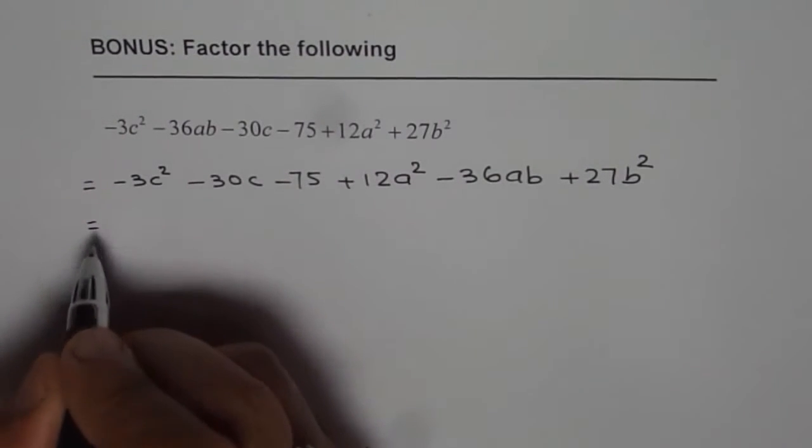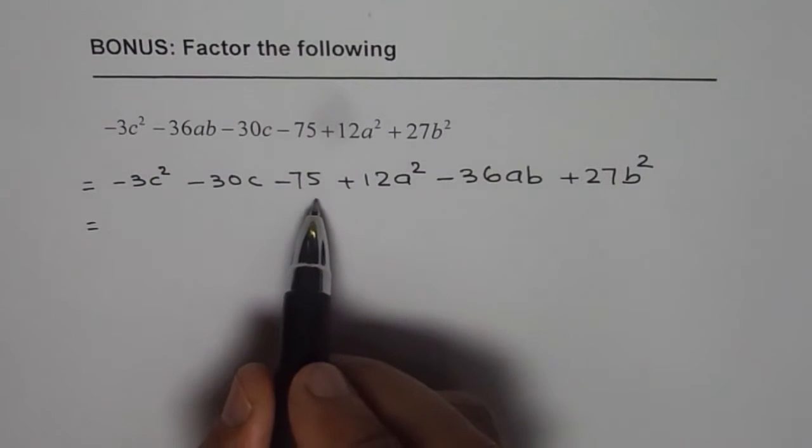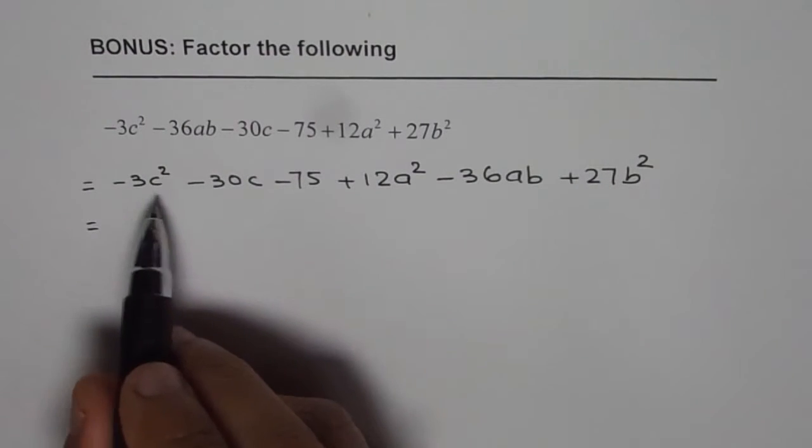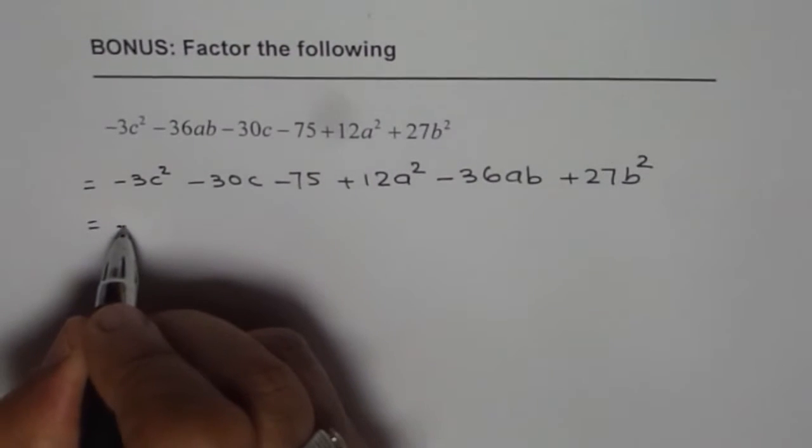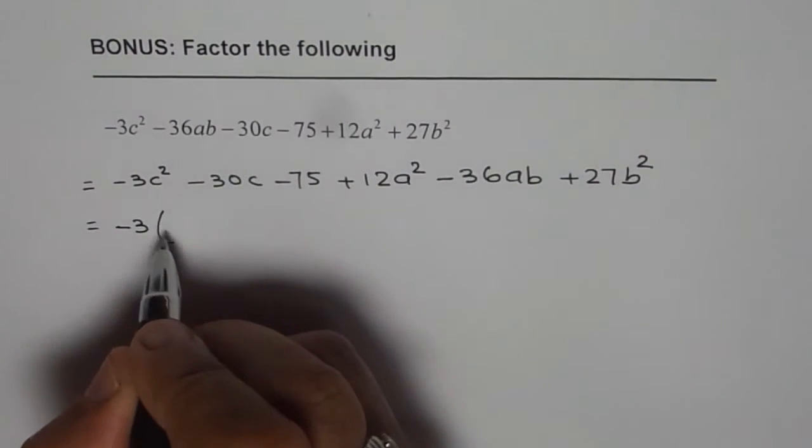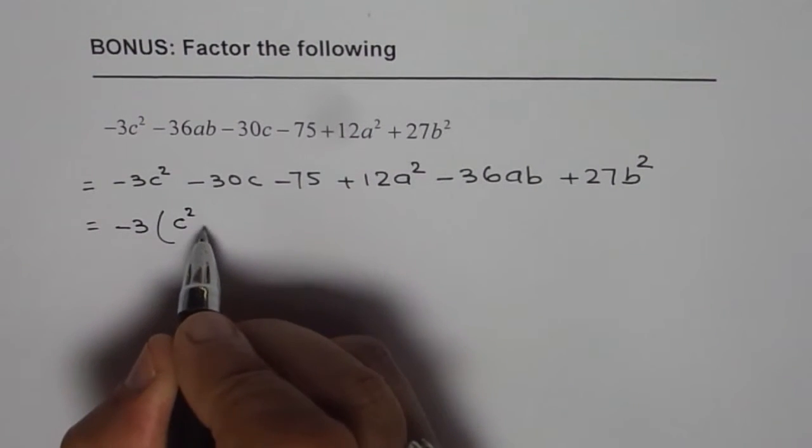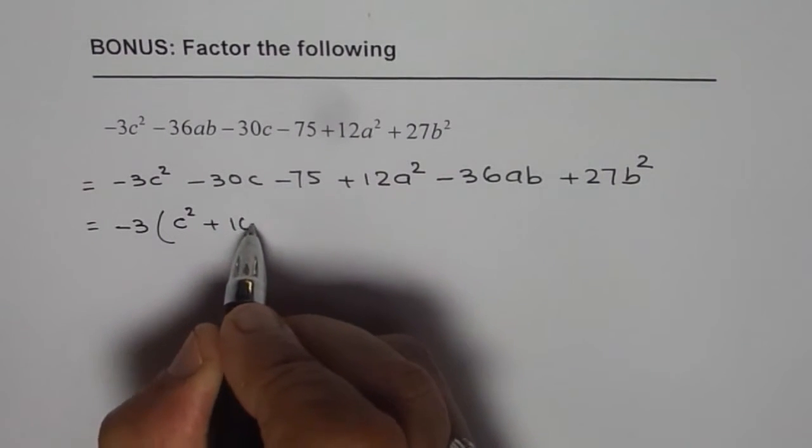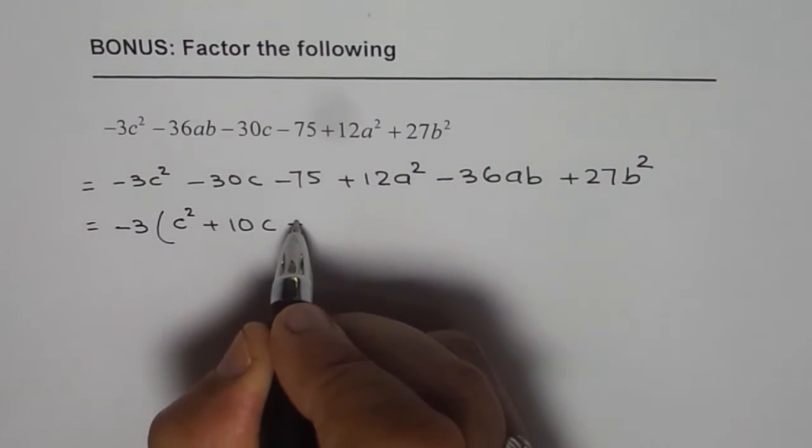Now we can group them in trinomials, two trinomials. The first one we can take minus 3 common. We are left with c square plus 10c plus 25.